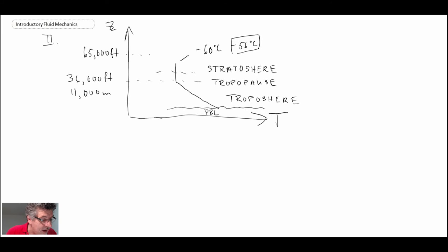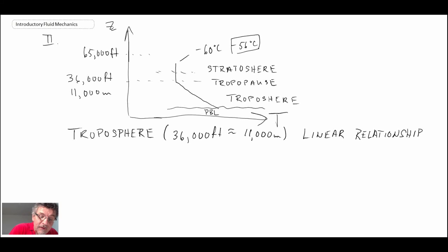But the important point here is that in the troposphere, so up to about 36,000 feet, which is 11,000 meters, we have a linear relationship. And we can work with that in order to solve for the pressure as a function of elevation.